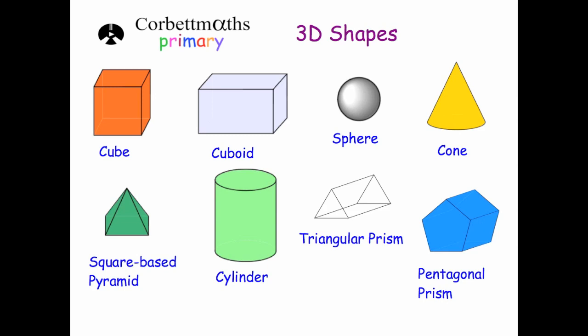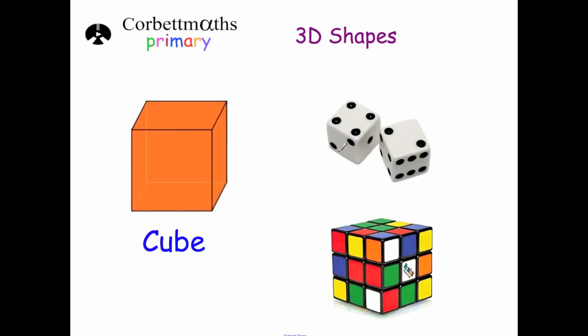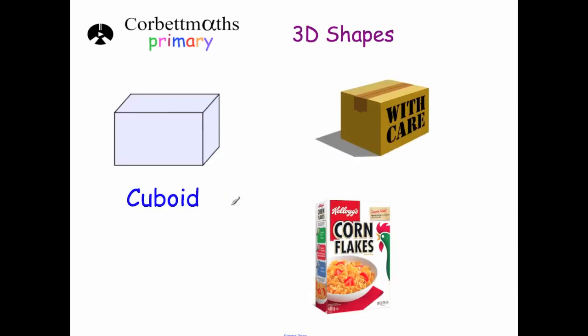Okay, some examples of where you may have seen these before. So a cube, some examples being dice or a Rubik's cube. A cuboid, some examples being a box of cornflakes, even a box which may pack things into.